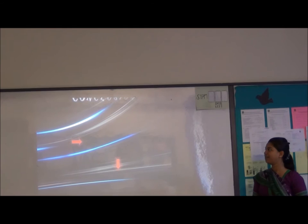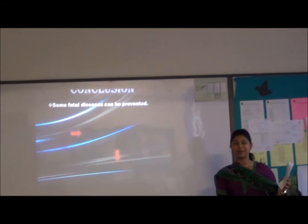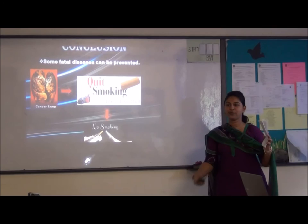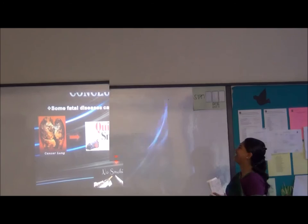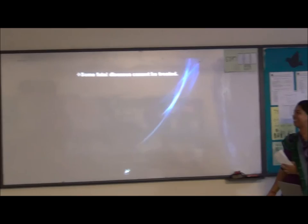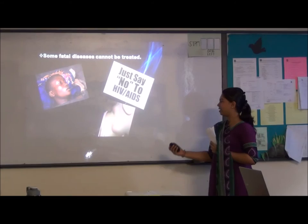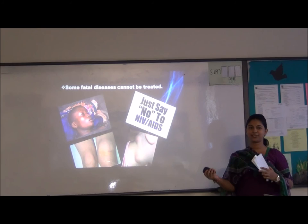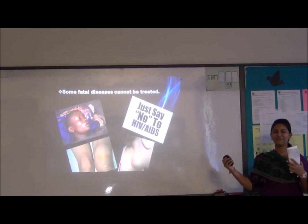In conclusion, some fatal diseases can be prevented — for example, we can prevent lung cancer by quitting smoking or not smoking at all. However, some fatal diseases such as African trypanosomiasis, AIDS, tularemia, and brucellosis currently cannot be fully treated and have no confirmed vaccines or treatments. We hope that future research will find treatments or medications for these diseases. Thank you.